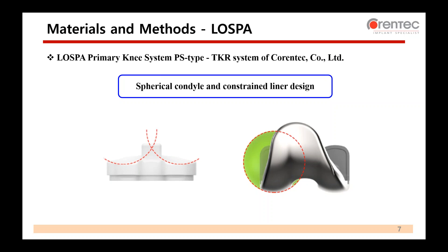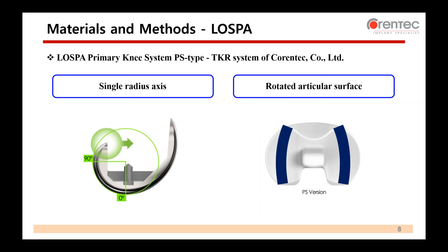In the simulation, the geometry of the LASPA total knee replacement system was used, which is developed by orthopedic implant company Corentec. The femoral condyle of LASPA is designed with spherical geometry, meaning the femoral component has the same radius in both the frontal and sagittal planes. The spherical condyle and constrained liner design of LASPA reduces contact stress and improves knee joint stability. LASPA is designed as a single radius axis for articular stability during 0 to 90 degrees of flexion, and the rotated articular surface of the tibial component enables axial rotation of the femoral component.